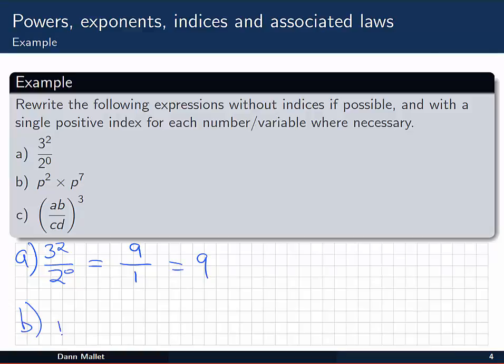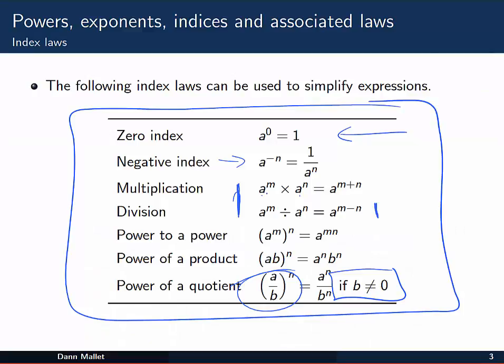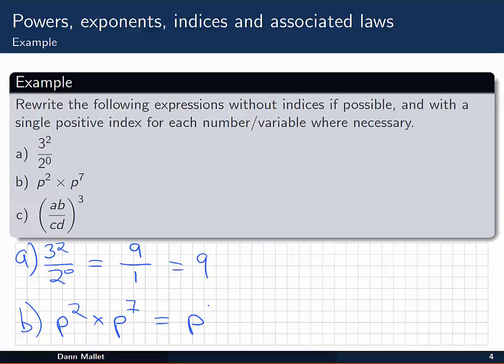In part b we have (-a)⁵. The important thing here is that the things being multiplied have the same bases, that's that p there. Our rule said that if we've got the same bases multiplied, then we leave the base and add the indices. So we're going to leave the base and add the indices: 2 plus 7, p to the nine.